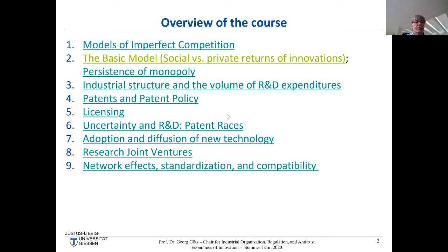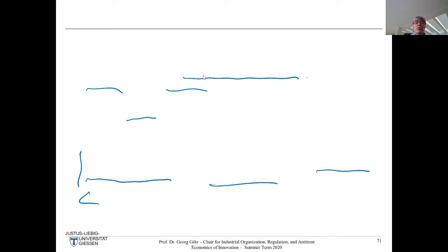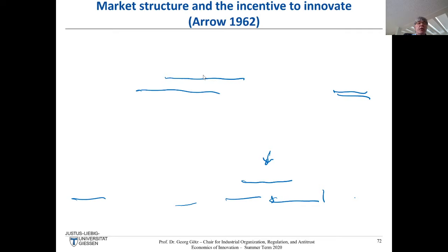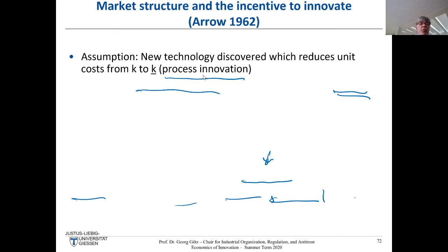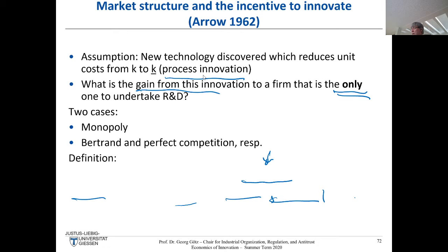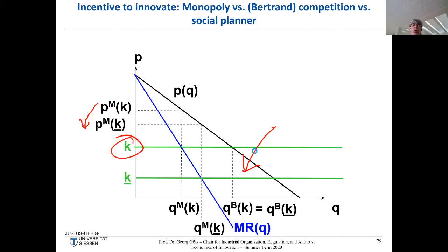I started with what is called the basic model — the Arrow model — which you can still see underlined from last week. I want to jump right back to one of the diagrams which summarizes all of what we did last week. This is a model you already learned.